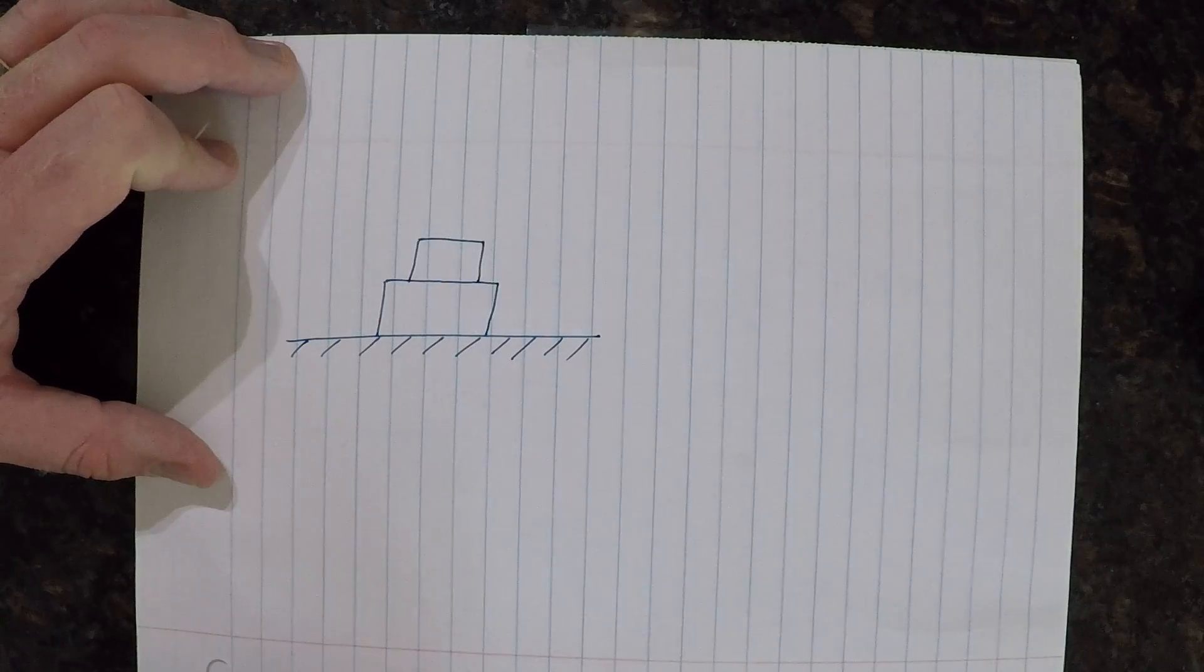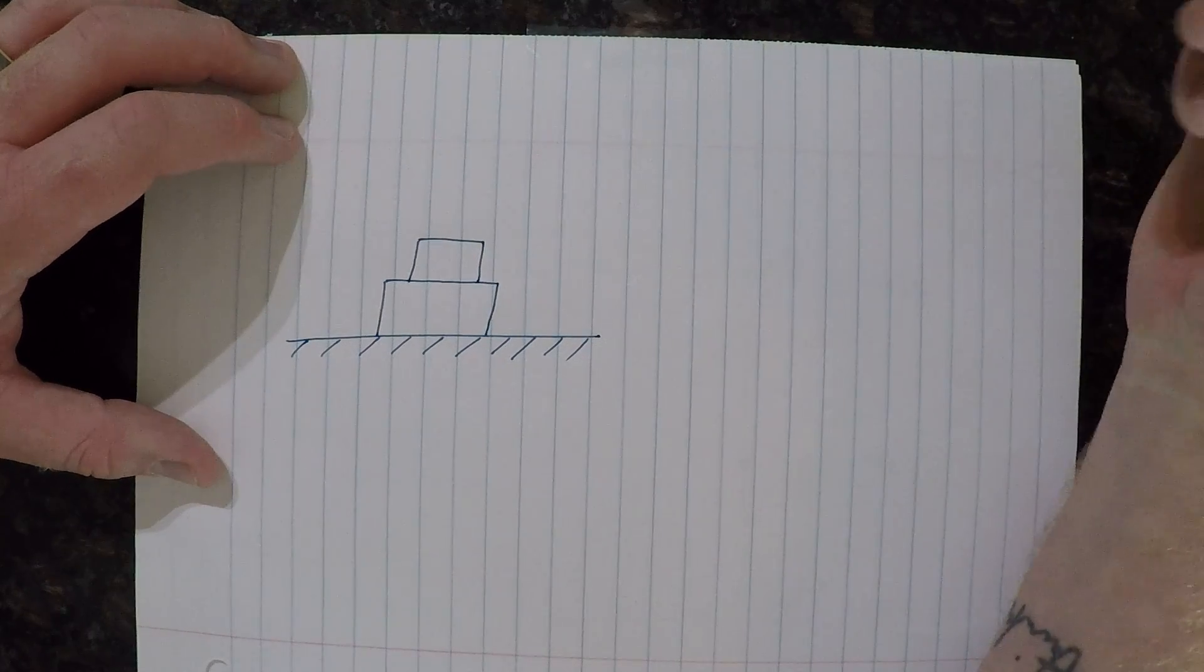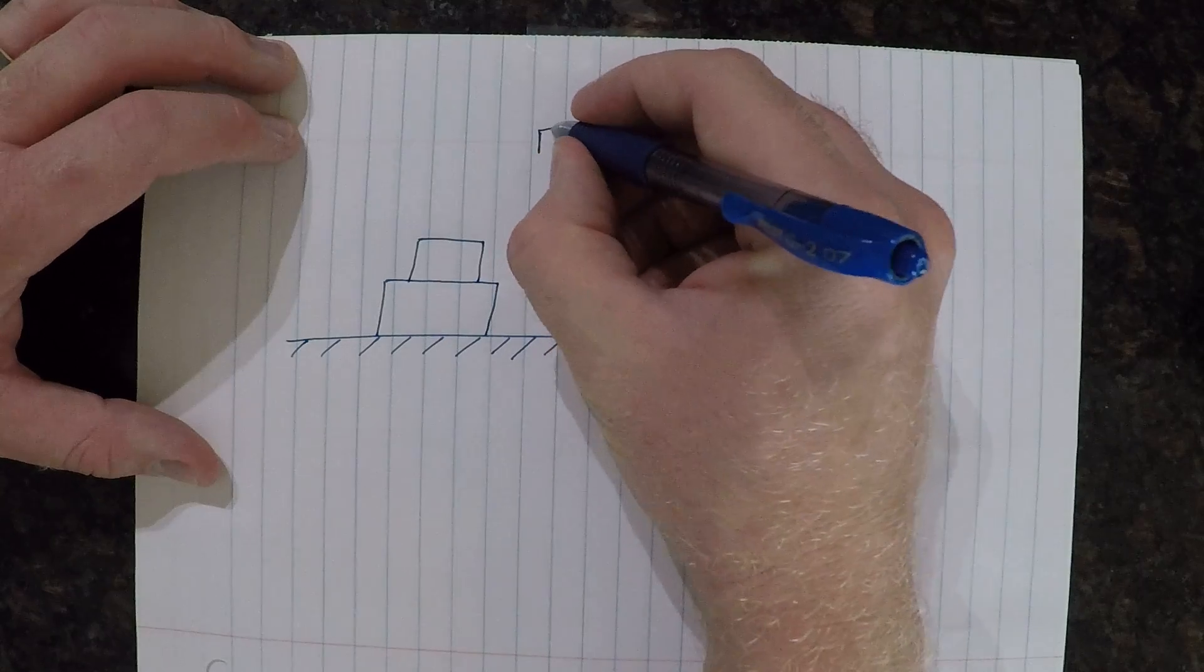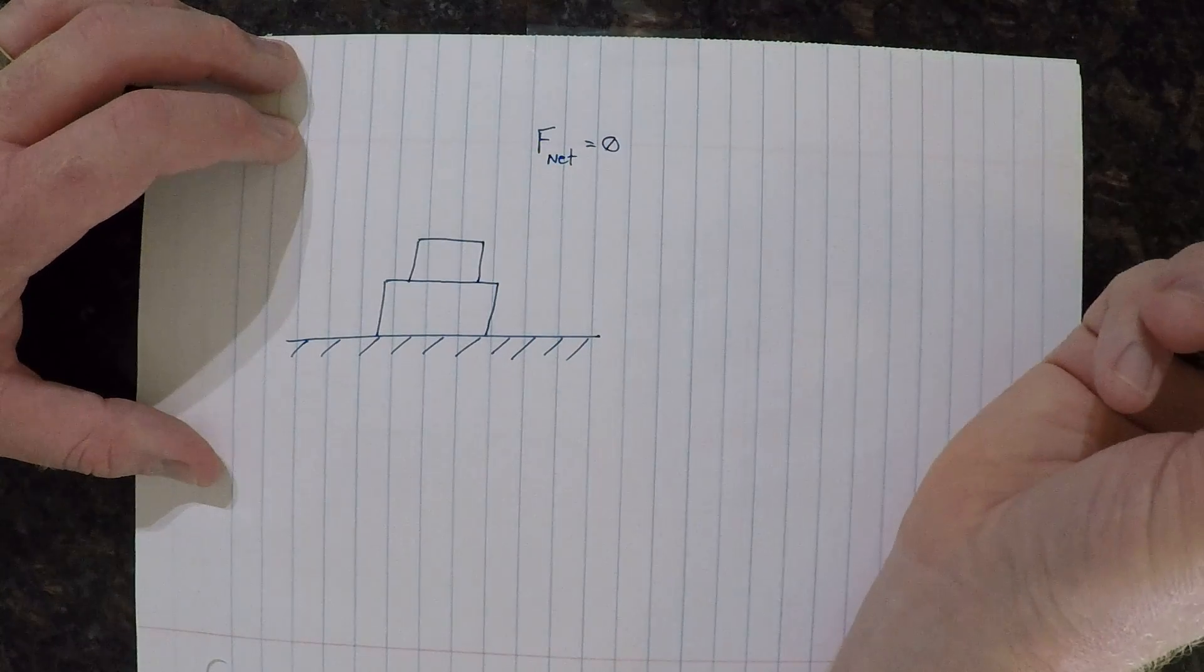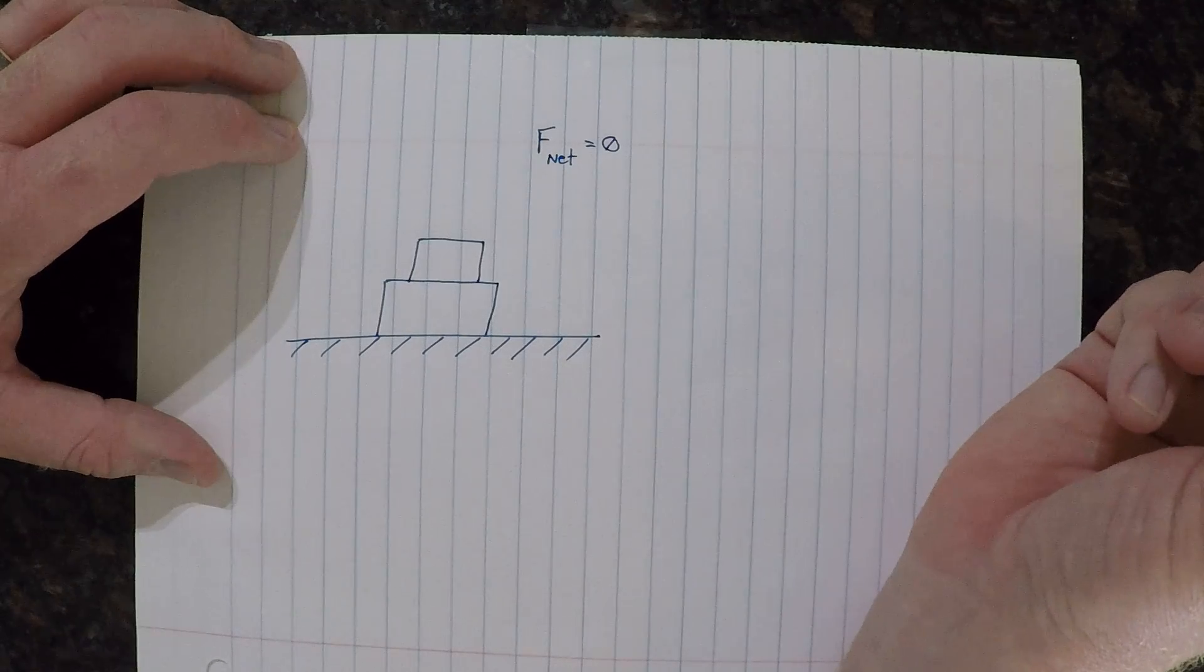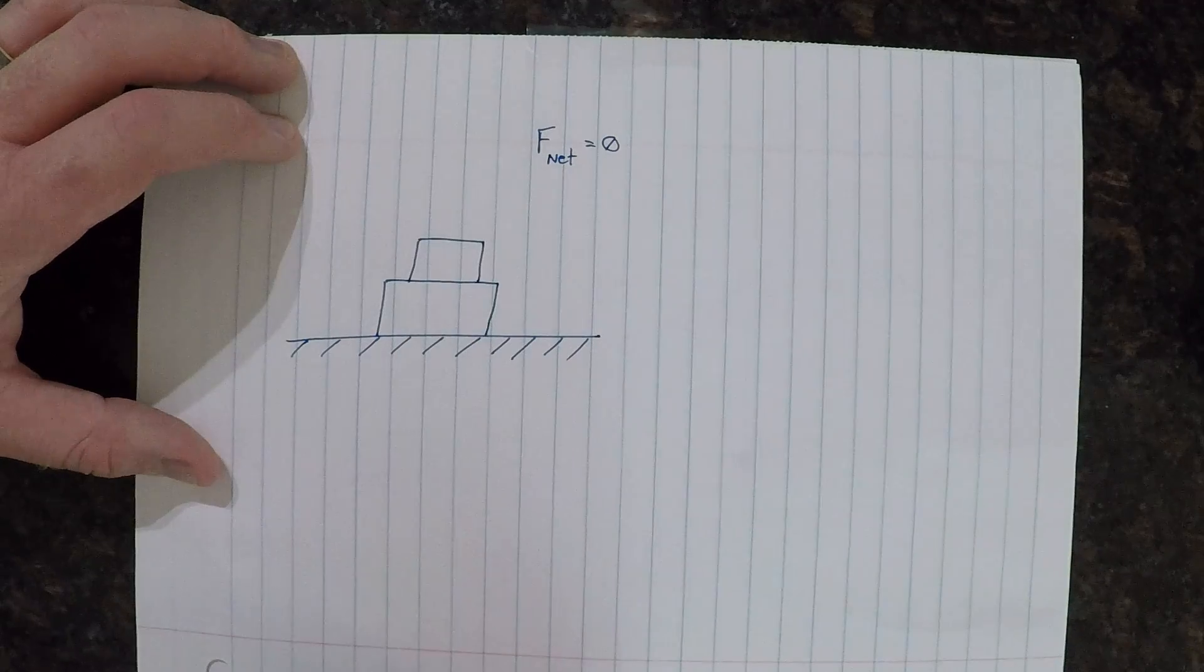And for this example, let's just say that the two objects are in a state of rest. That there is no net force. So the net force is equal to zero for both objects. And what that means is that there's no acceleration here. That all the forces are balanced.